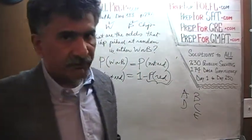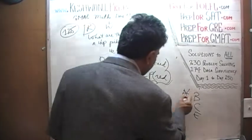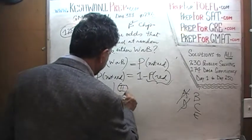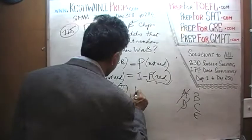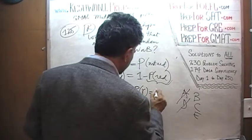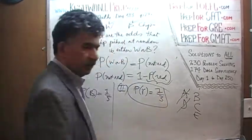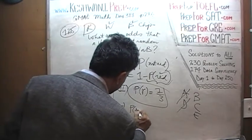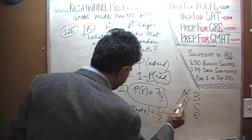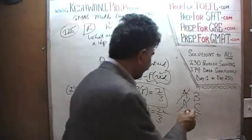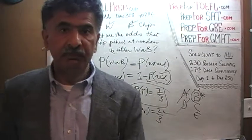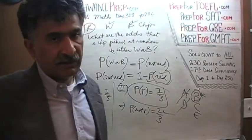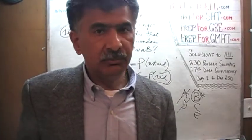The second statement tells us that the probability of picking a red one is one-third. If P(red) is one-third, then the probability of not picking a red one is two-thirds. That answers the question directly. The probability of picking a chip that is either white or blue is two-thirds, because it's not a red one. The answer is B.